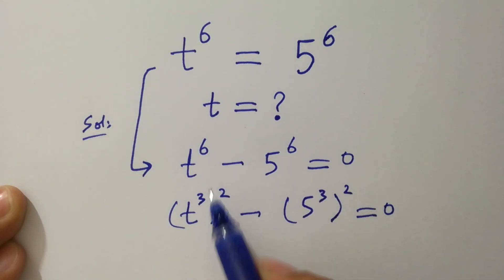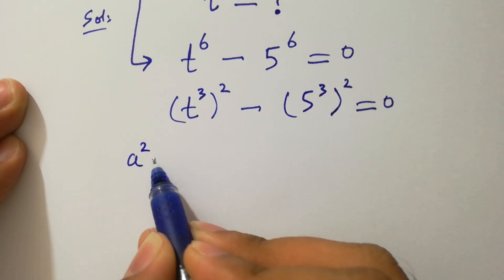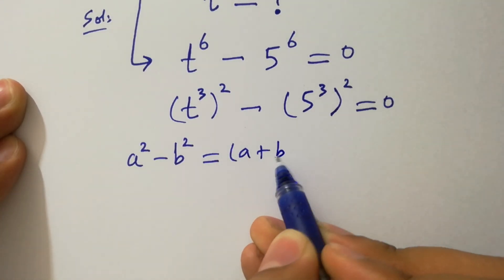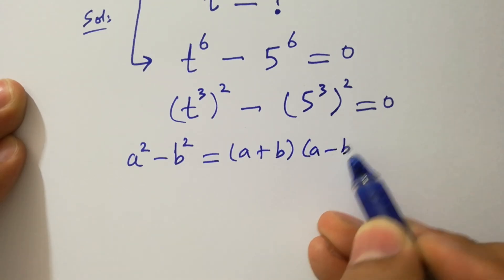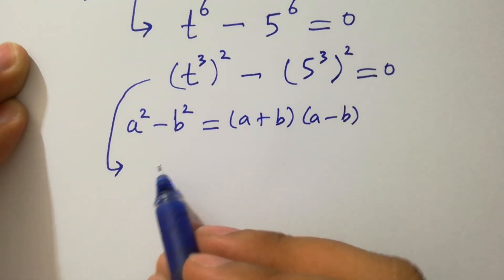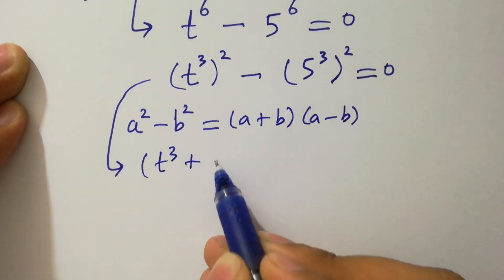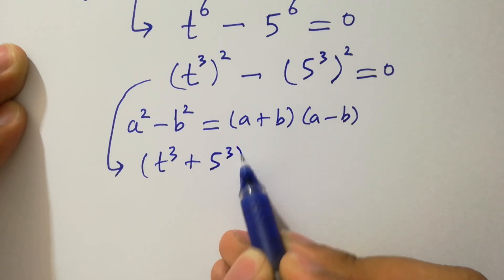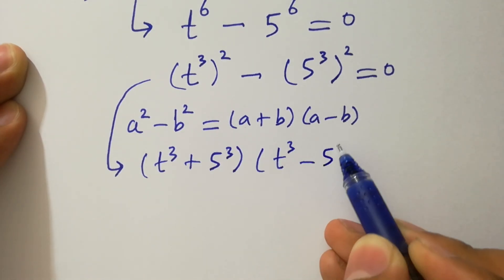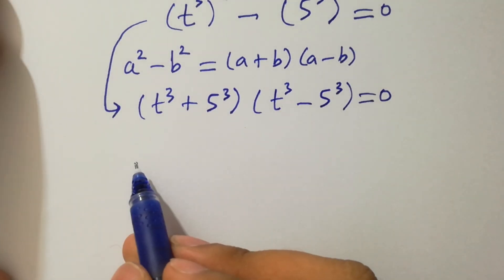Since 3 times 2 is 6, we apply the formula of a squared minus b squared, which equals a plus b times a minus b. It will be t cubed plus 5 cubed, times t cubed minus 5 cubed, equal to 0. We have two cases here.